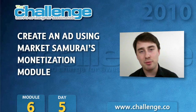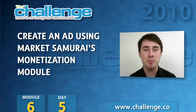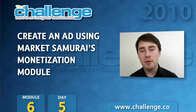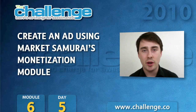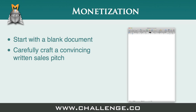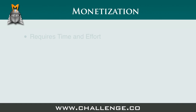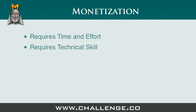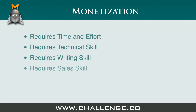For most people, writing an affiliate ad takes a long time and a lot of effort. But that's because most people write their ads the traditional way. They start by opening a blank Word document, carefully craft a convincing written sales pitch, and then upload it to their site by hand. If you do it this way, not only does it take longer and more effort, you rely on your technical, writing, and sales skills in order to get your ad profitable.